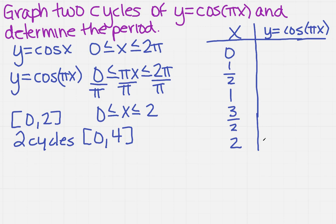So what does that mean? If I use 0, I get 1. If I do 1 half, I get 0. If I do 1, I get negative 1. If I do 3 halves, I get 0. And if I do 2, I get 1.